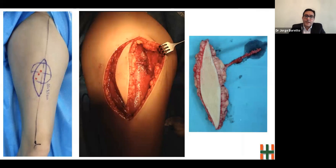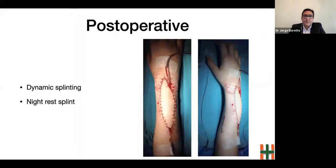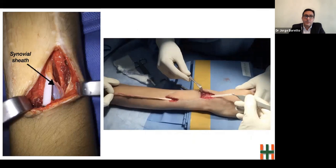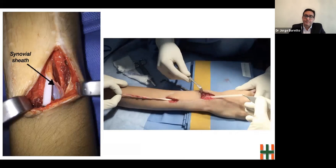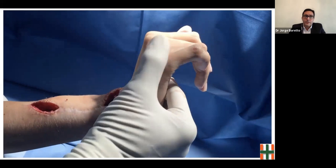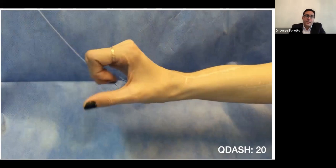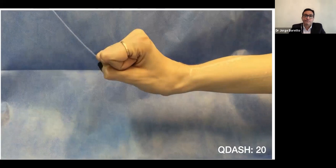A dynamic splint was used in the postoperative period to allow gliding of the silicone rods. The tension of the tendon graft was evaluated with the tenodesis maneuver, and this is the final cosmetic and functional result. The patient returned to university and is now a dentist.